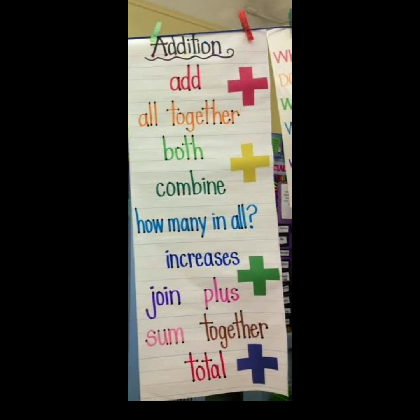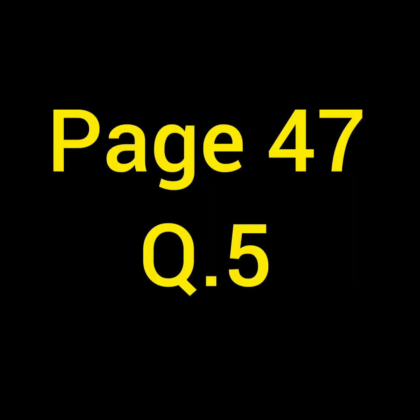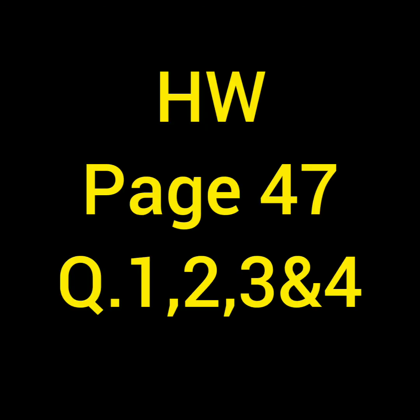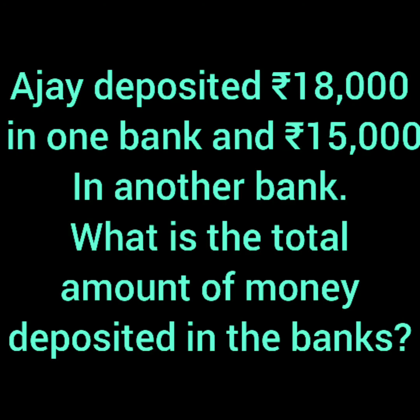I will do one more sum from page number 47 — the fifth one. Exercises 1 to 4 are your homework. Now for the fifth one: Ajay deposited Rs. 18,000 in one bank and Rs. 15,000 in another bank. What is the total amount of money deposited in the banks?